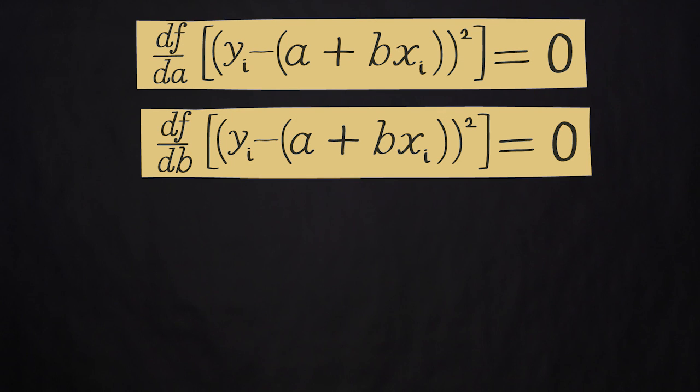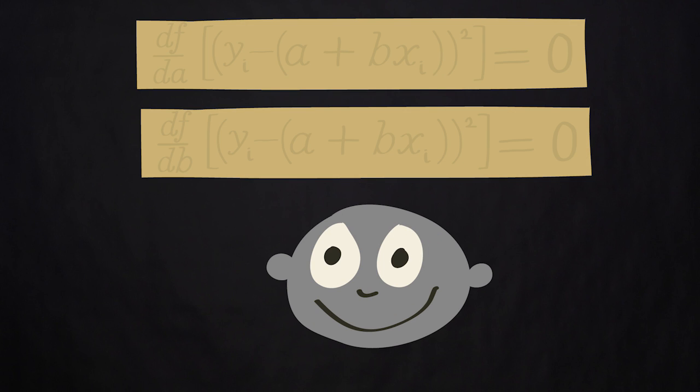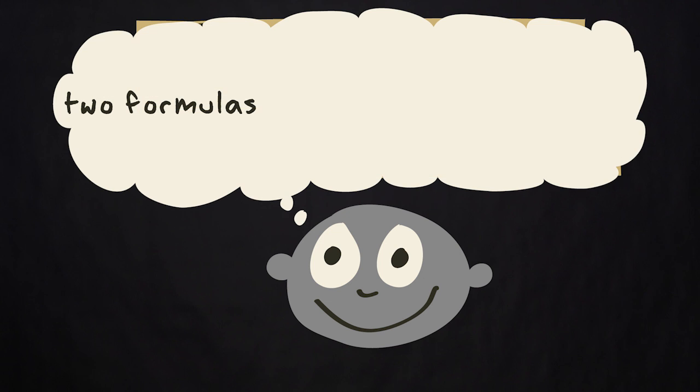Now for the tricky part. We can express the sum of squared residuals as a quadratic function that we can minimize. Mathematically, this involves taking the partial derivatives with respect to a and b, setting them to zero and solving for a and b. Now don't worry, you can ignore this bit of math. You don't have to perform the ordinary least squares method yourself, because it results in two simple formulas that you can use to easily calculate the intercept and regression coefficient.